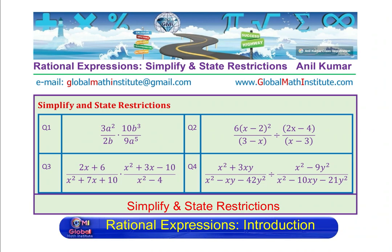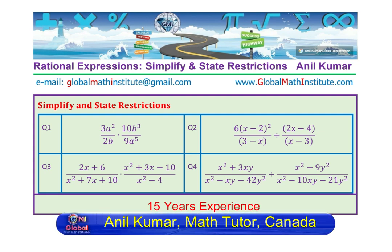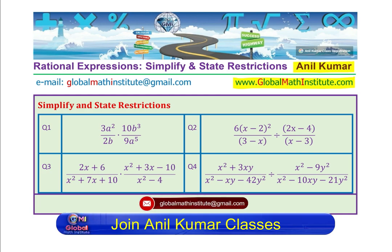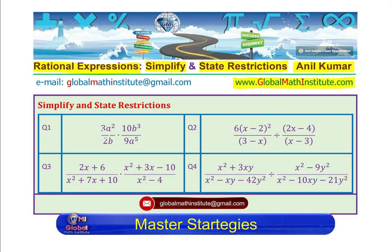In this video, we will try to understand how to simplify rational expressions and write their restrictions. I am Anil Kumar, welcome to my YouTube channel and the website Global Math Institute. We will talk about rational expressions, simplify them, and then state the restrictions. Four examples are before us — let us take them one by one, starting with the very basic question number one: 3a squared over 2b times 10b cubed over 9a to the power of 5.